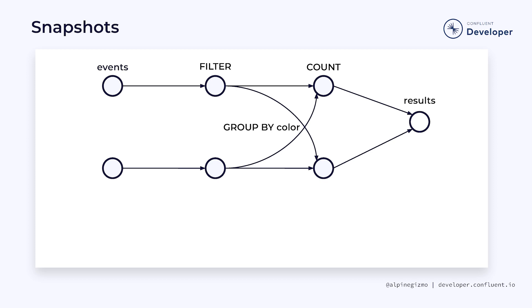To avoid these pitfalls, Flink implements a variant of the Chandy-Lamport distributed snapshot algorithm which produces globally consistent snapshots. This diagram shows a Flink job that we've seen before. The source is reading from an events topic, filtering out orange events, and counting the remaining events by color. The results are being written out to a results topic.